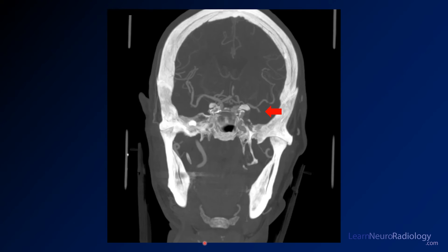Here you see the CT angiogram images. This is the left MCA — you see there's some irregularity of this branch that turns superiorly, and then you also see abrupt truncation of this branch. You see asymmetry here — this is the companion branch on the other side — and there's an occlusion, which is what's causing the ischemia.